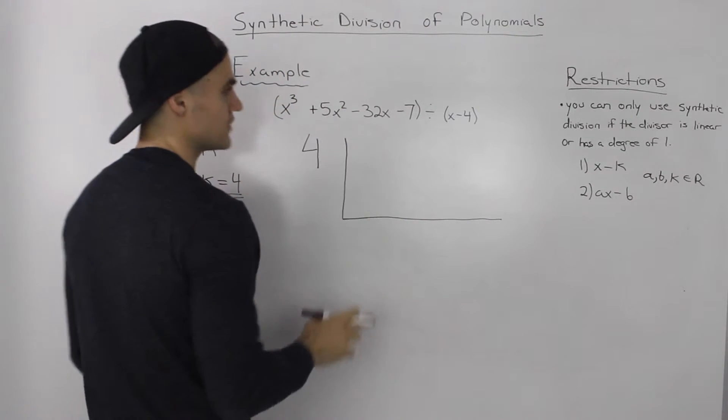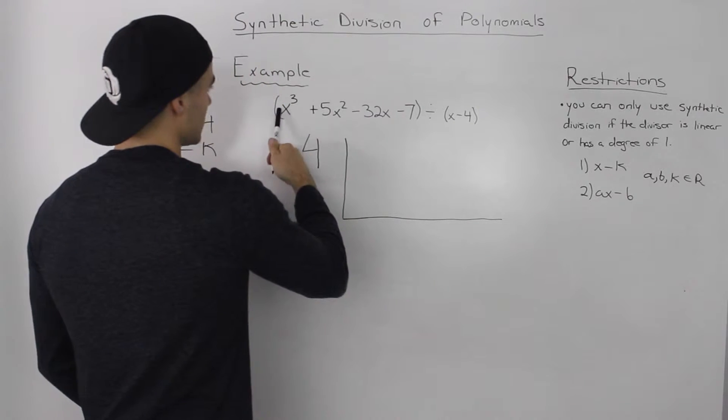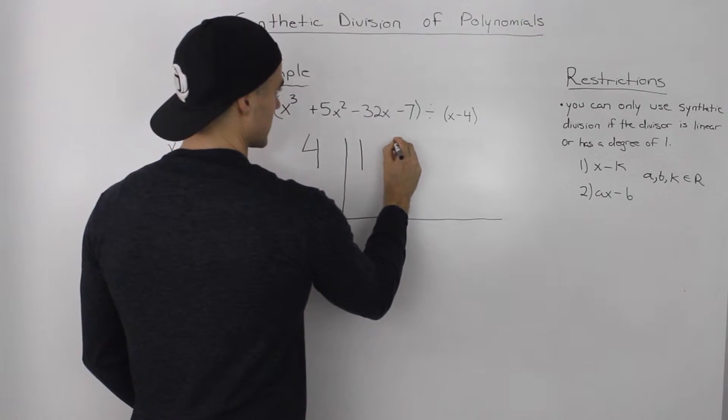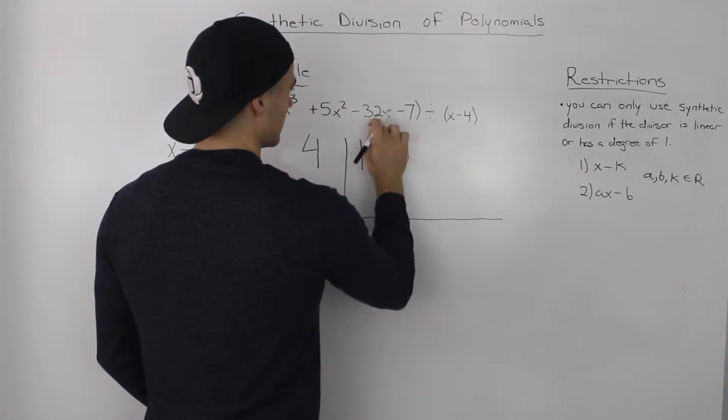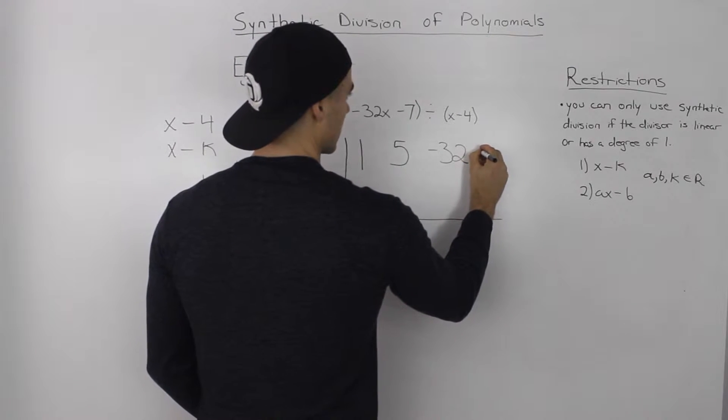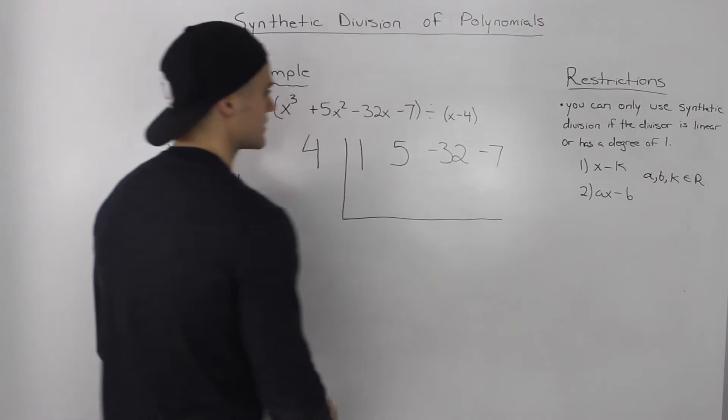In the top row, we write the leading coefficients of the dividend. So the first one is 1, next one is 5, next one is negative 32, and the next one, the constant, is negative 7.